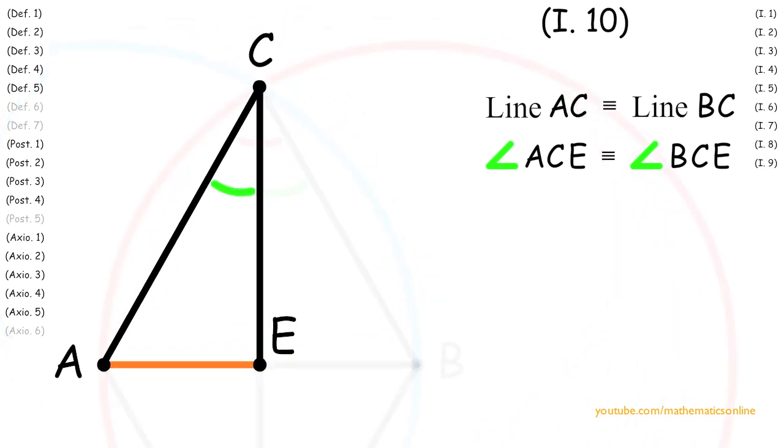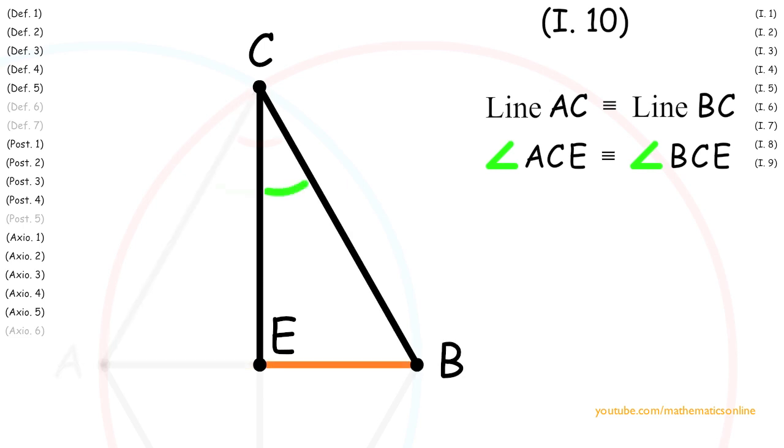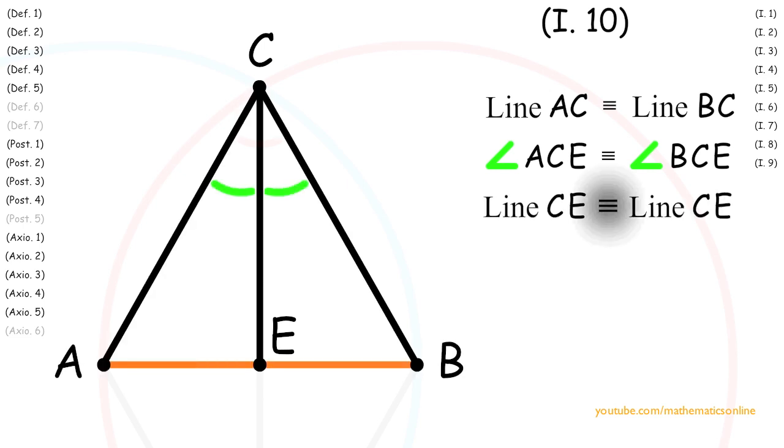Looking at triangle ACE and triangle BCE, we can see that they both share a side in common. Specifically, line CE is congruent to line CE.